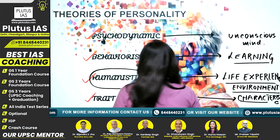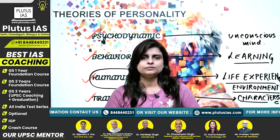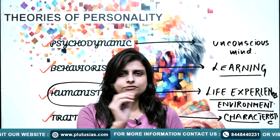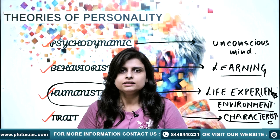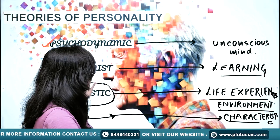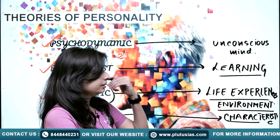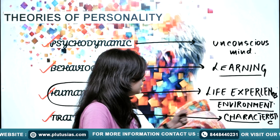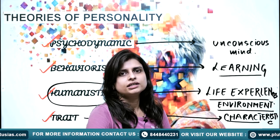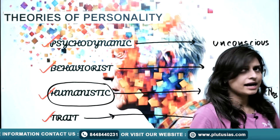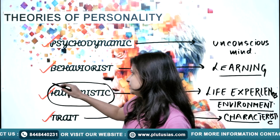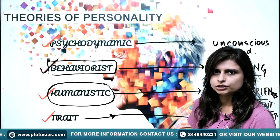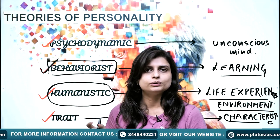To summarize: psychodynamic is about the unconscious mind; behaviorist is about learning in the process; humanistic perspective is about life experiences and the environment; and trait is about the characteristics of personality. I'll now take one approach in more detail — the behaviorist approach, also called the social cognitive view — and explain how this actually influences personality.